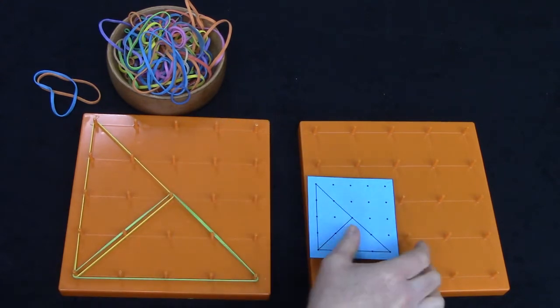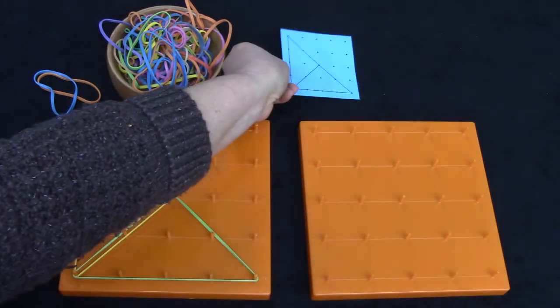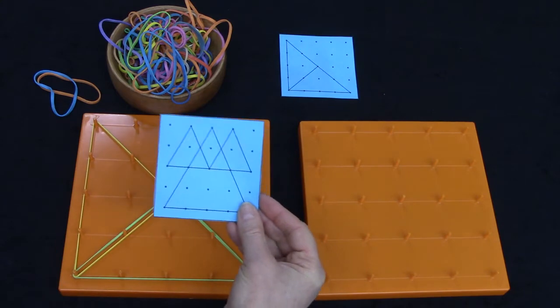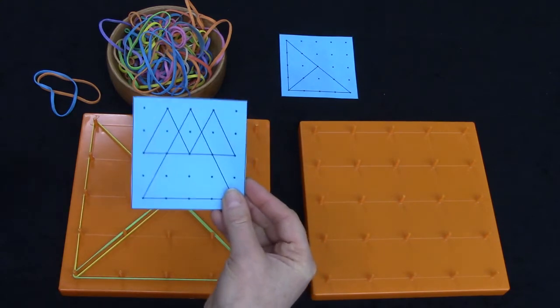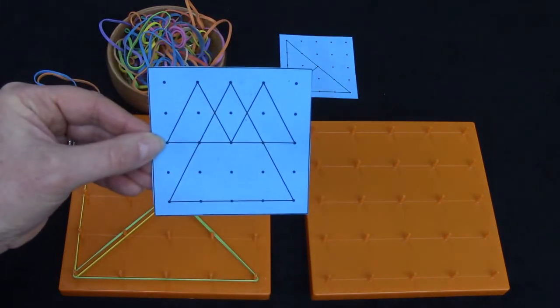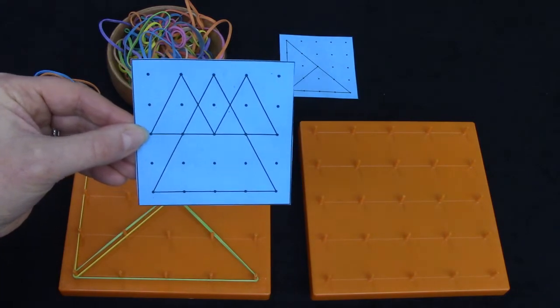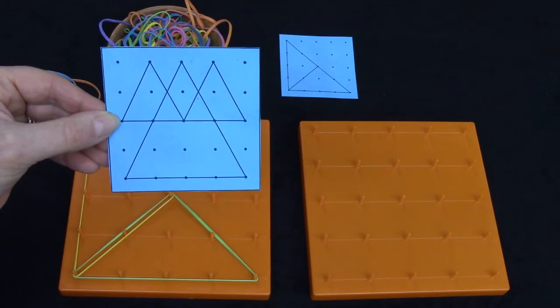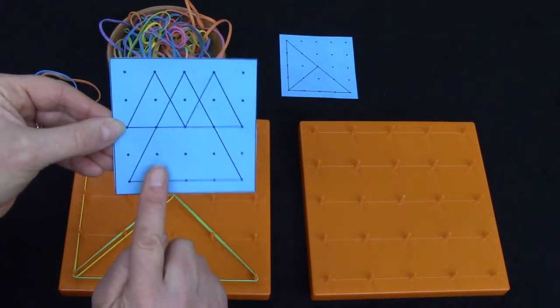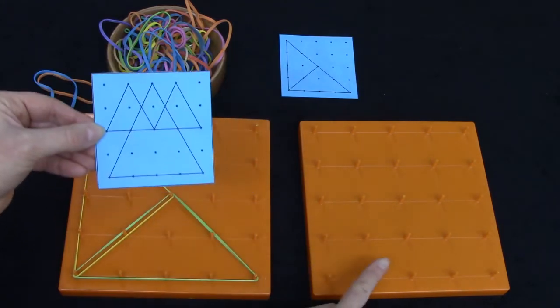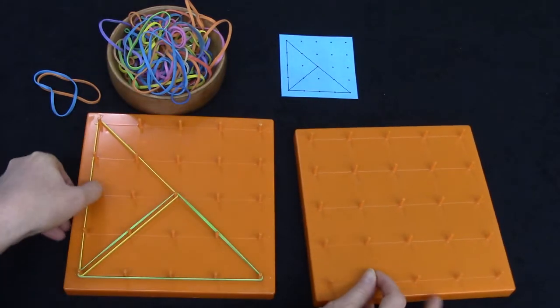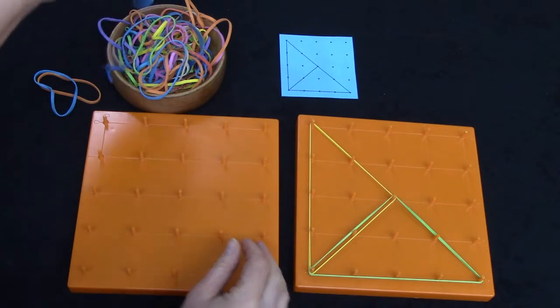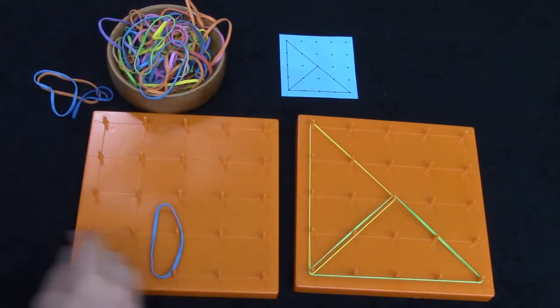Well let's take a look at another little card like this and see if we can make this design. Hmm let's look at it really closely. How many triangles do you see? Hmm I see a giant triangle here and I'm gonna try to make it on this board. I'm gonna move this one over. All right I think I'll use this fun blue one.